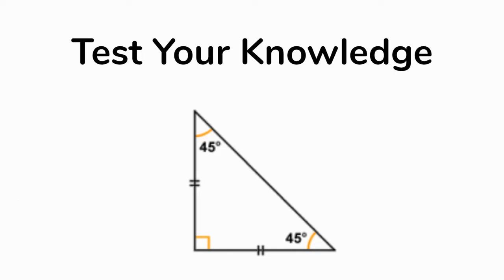And one more: go ahead and classify this triangle. This is an isosceles right triangle — it has two sides with two dashes, so those are congruent, and it has a right angle. Note: the order of the words doesn't matter. You could say 'isosceles right triangle' or 'right isosceles triangle' — both are fine.